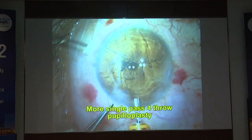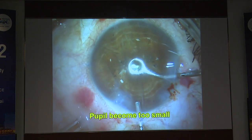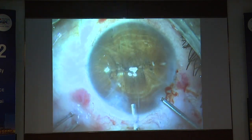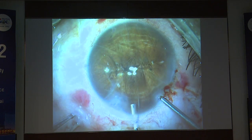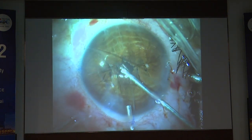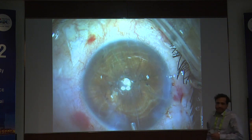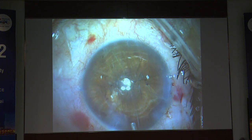More single-pass pupilloplasties are done as the pupil is still large enough. If it becomes too small, I use the vitrectomy probe to enlarge it a little and center it. The Purkinje image P1 — the triangle visible — must be centered onto the pupil. Additionally, we have designed a pupillary device with Jack Holliday called the Holliday Pupil device, which has 0.5, 1, 1.5, 2mm options. Ask the patient which pupil size they prefer and make the pupil to that size.